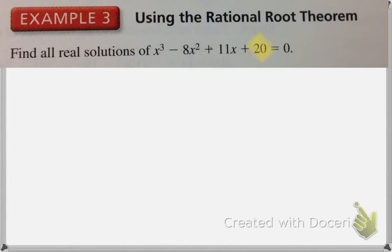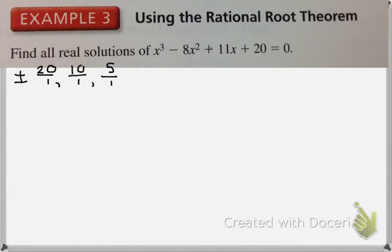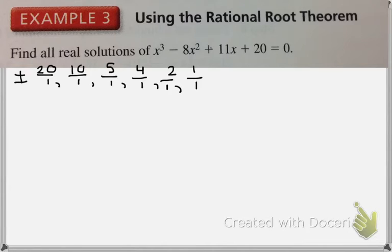I can see that my constant is 20, and my lead coefficient is 1, which is really nice. So I'm going to list out all of my possible p over q values: plus or minus, we have 20 over 1, 10 over 1, 5 over 1, 4 over 1, 2 over 1, and 1 over 1. So now we go through the process and we start checking — you can check positive or negative of any of these numbers, and one of them will eventually work. Let's start by checking positive 1.